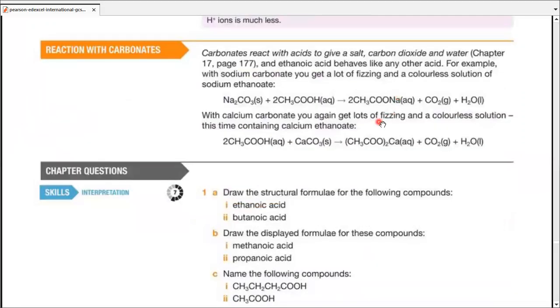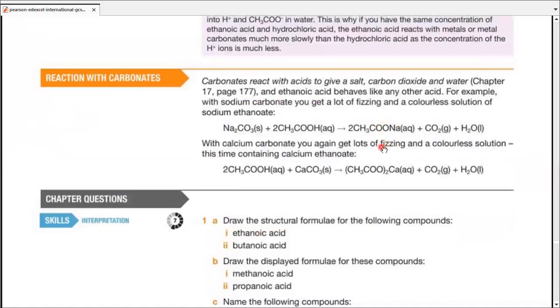So moving on. The reactions with carbonates. It's pretty simple. When reacting with the carbonate, they give salt, they give carbon dioxide, they give water. So we have all three products over here. We get a lot of fizzing because you're producing a gas. You get a colorless solution because the ethanoates are usually colorless with normal elements like sodium, potassium, magnesium, calcium. Yeah. Okay.